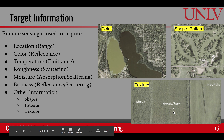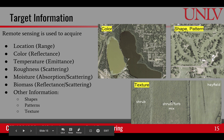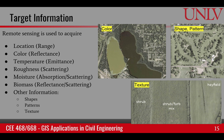For example, in this case, the hayfield and shrubs have different texture. Even though the color is very similar, the texture is different. Here we have different patterns and shapes telling us about the surface, and there is lake, trees, and grass.